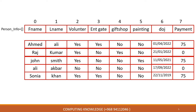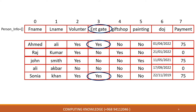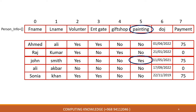Looking at the data, there are four volunteers: Ahmad, Raj, John, and Sonia. For entrance gate, two people are working: Ahmad and Sonia. For gift shop, one person: Raj. For painting and decorating, one person: John. Three people have paid the payment: Ahmad, John, and Sonia.